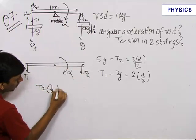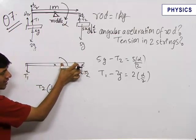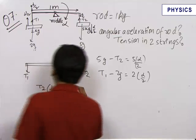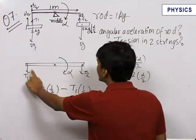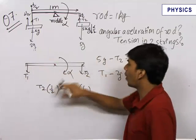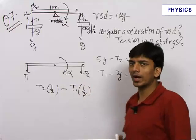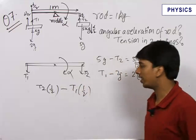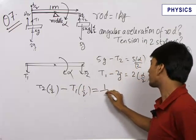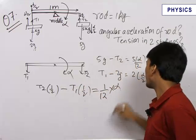Therefore, T2 into 1 by 2, that is F into R perpendicular minus T1 into 1 by 2. This is because this tension is trying to rotate the rod in the opposite direction of alpha. So what we have to write is always, the net external torque in the direction of alpha is equal to I into alpha.